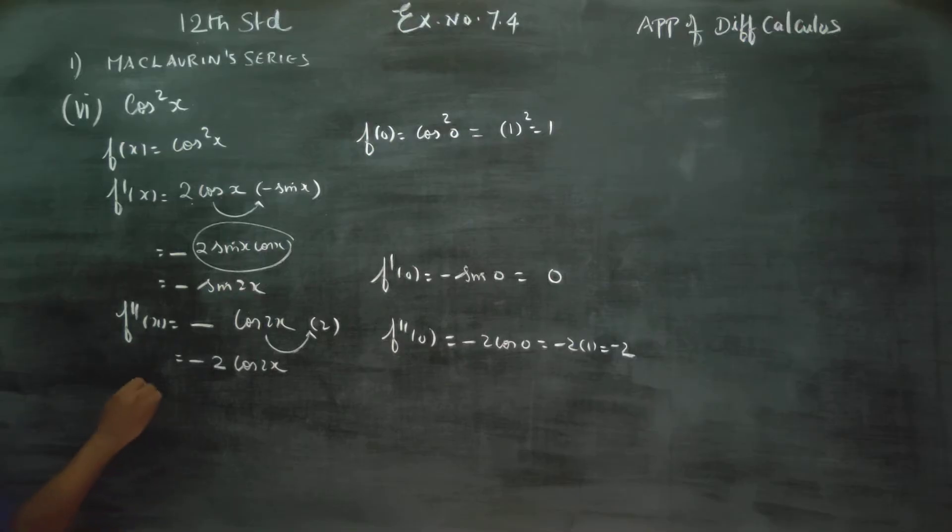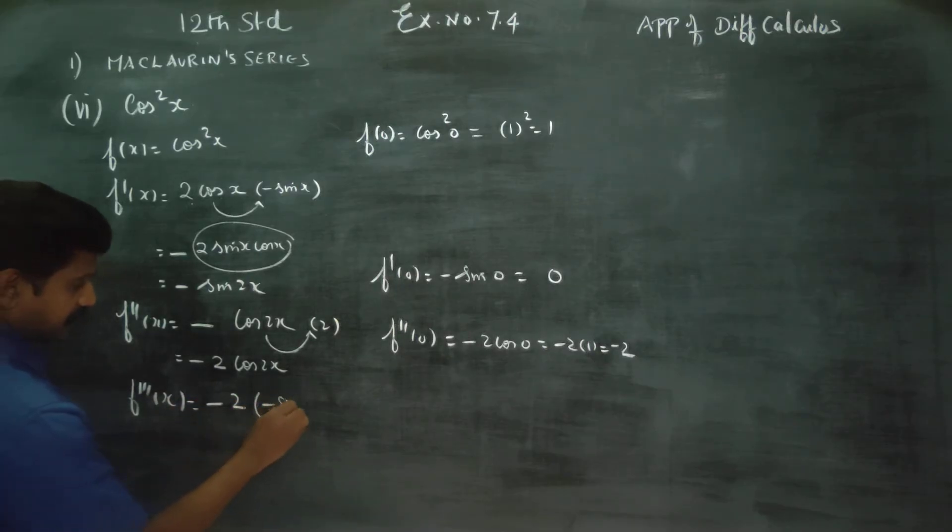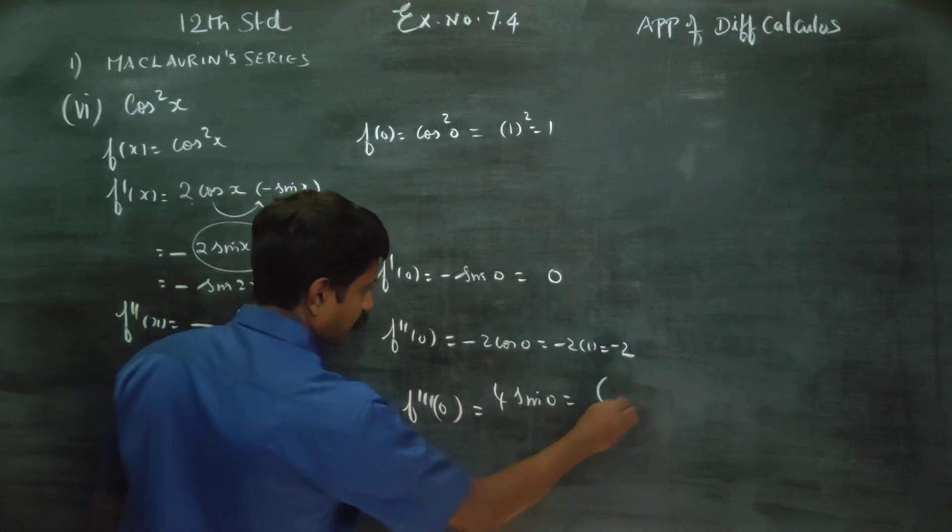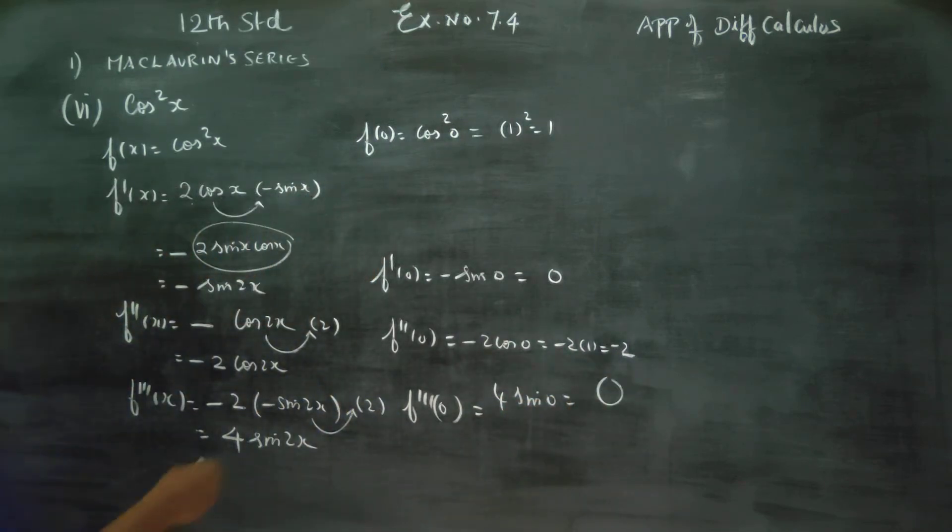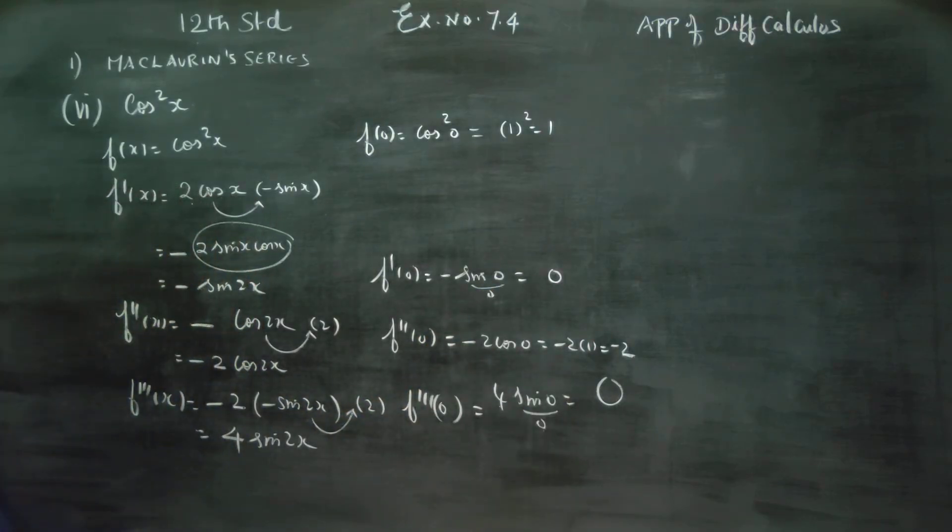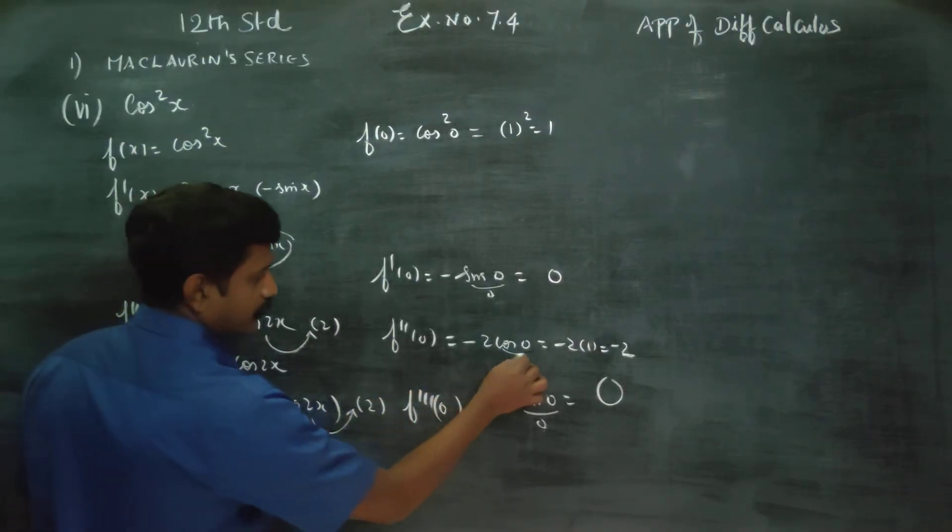Next, f triple dash x. Minus 2 cos differentiate gives minus sin 2x, chain rule 2x gives 2. We will be getting plus 4 sin 2x. f triple dash 0, sin 0 is 0, 4 into 0 is 0.